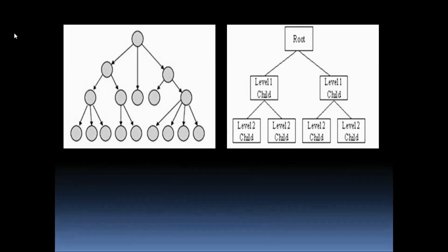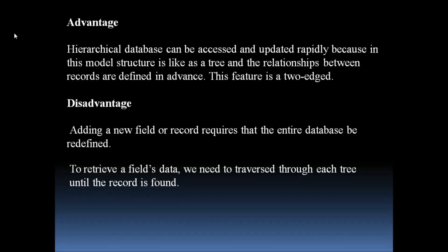Each child record should have only one parent, and a parent can have multiple children. What is the advantage of a hierarchical database? Hierarchical databases can be accessed and updated rapidly because the relationship between the records is defined in advance. We have links between the parent and child, so we can move from different nodes to another node — it is two-way communication.